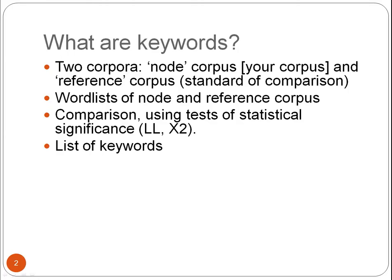What are keywords? Keywords are a way of comparing your corpus with another corpus to find out more about your corpus — how is it unique or special? In brief, keywords are words that are unusually frequent or infrequent in your corpus when compared to another corpus.